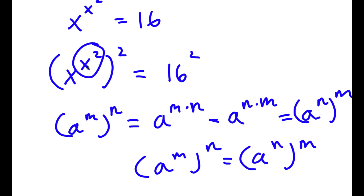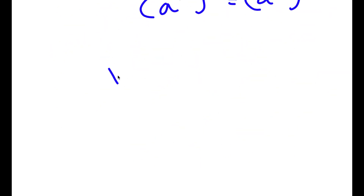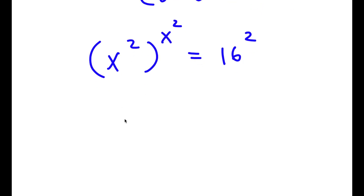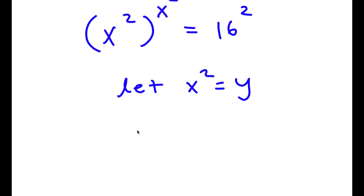So in this case we can think of x to the power of 2 as m and 2 as n. So I'm going to switch these two places, so now I have x to the power of 2 to the power of x to the power of 2 is equal to 16 to the power of 2. Now I'm going to let x to the power of 2 equal to the variable y. So now I have y to the power of y is equal to 16 to the power of 2.